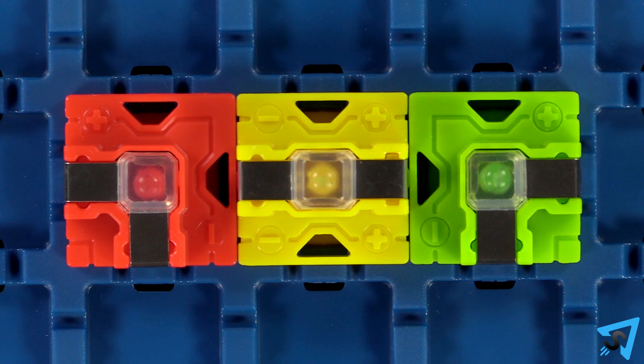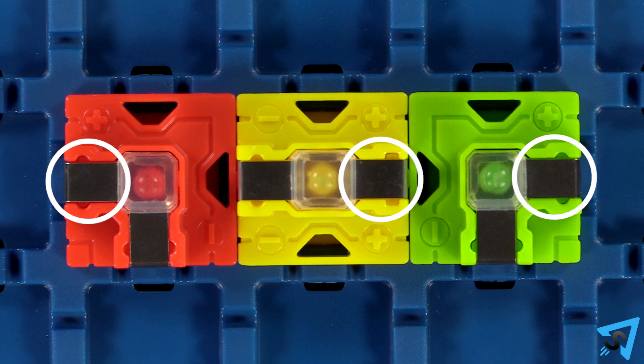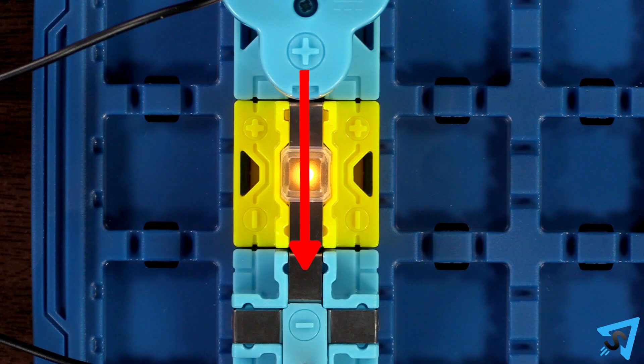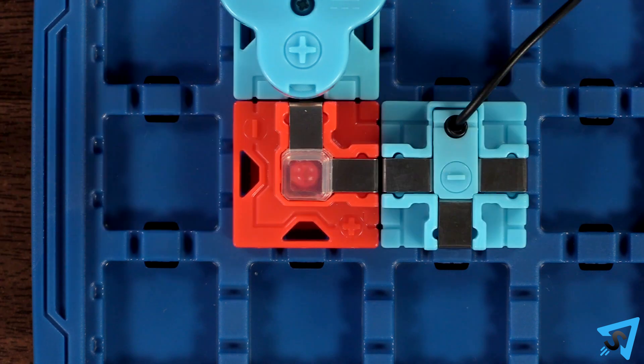Beacons only light up when current flows into the positive side, as indicated by the plus, and out of the negative side, as indicated by the minus. Current can only flow in one direction through these.